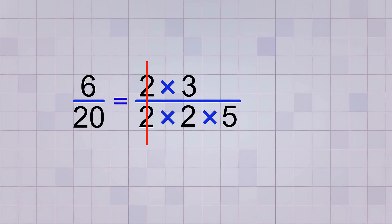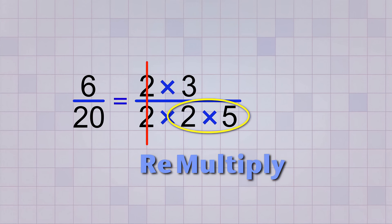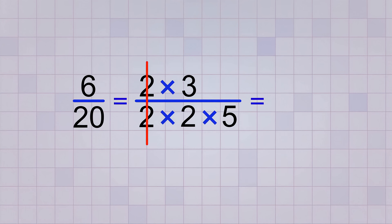And last, once all the common factors have been cancelled, you need to re-multiply any factors that are left over on the top or bottom. This makes sure that you end up with only one number on the top and bottom of your simplified fraction.